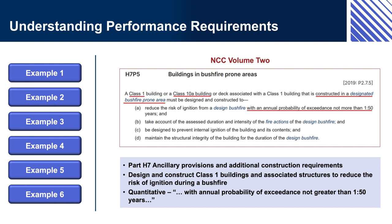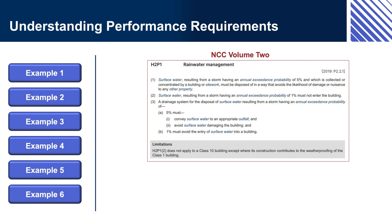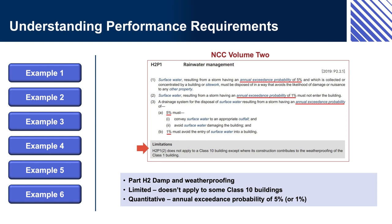Example 3 — NCC Volume 2, H7P5: Buildings in Bushfire Prone Areas. Part H7 Ancillary Provisions and Additional Construction Requirements requires design and construction of Class 1 buildings and associated structures to reduce the risk of ignition during a bushfire. This is limited to buildings constructed in designated bushfire prone areas. Note that Tasmania has a variation to this performance requirement. Example 4 — NCC Volume 2, H2P1: Rainwater Management. Part H2 Damp and Weatherproofing requires design and construction of the building and drainage to prevent surface water from entering the building or damaging or creating a nuisance for another property. This is limited — it doesn't apply to some Class 10 buildings.